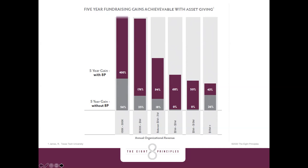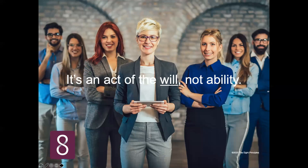This asset-based giving approach — building relationships with donors to the point where a critical mass of about 20% make at least one asset gift — produces incredible growth. It doesn't have to be a large gift. Asset gifts tell you that you've achieved high-level relational ties because people are willing to cut a check from an asset, not income. This research is based on 200,000 organizations over a five-year period, so it's verifiable. And this is an act of the will — you don't need high-powered development officers or a lot of money to start.